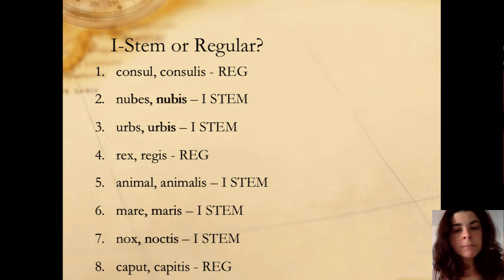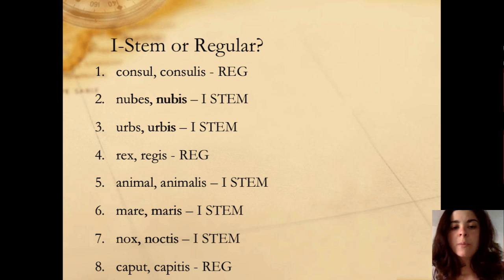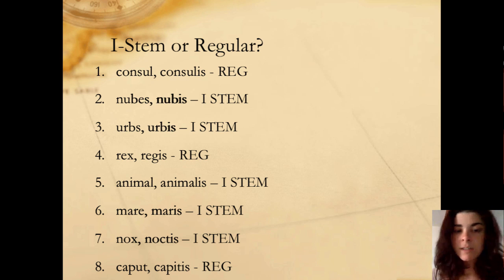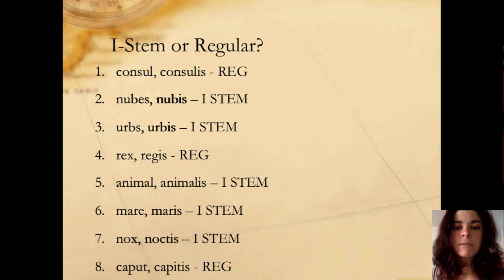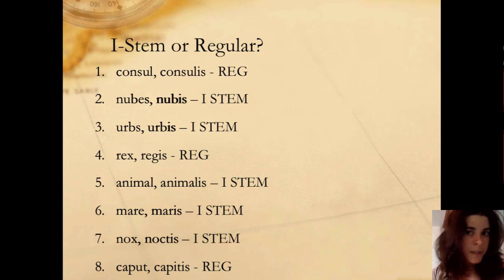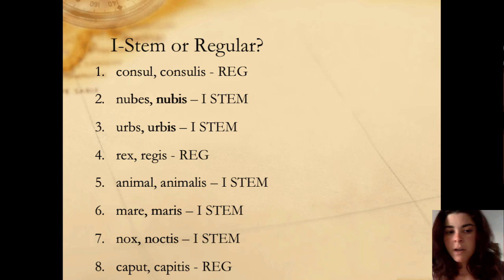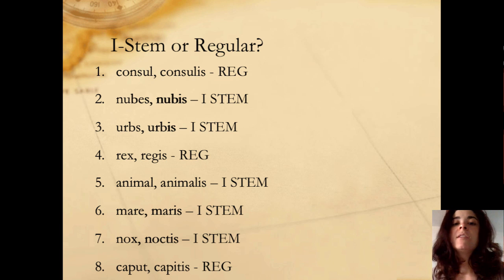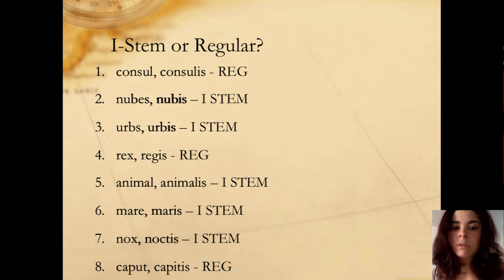The second word is an i-stem, because the two forms nubes and nubis look really, really similar — the first ends in ES and the second in IS, which is part of that ES/IS indicator in the nominative. Herba, herbis: herba is one syllable and ends in S — therefore i-stem. Rex, regis: remember, this is regular because I mentioned it as an exception to the rule. Animal, animalis: this ends in AL and it's neuter — i-stem.